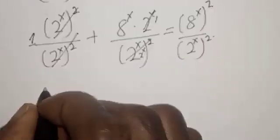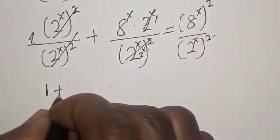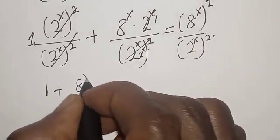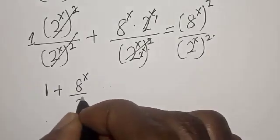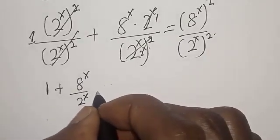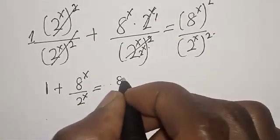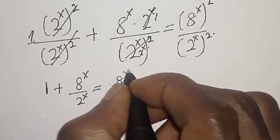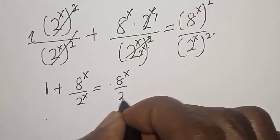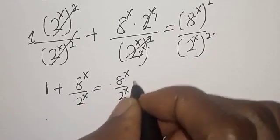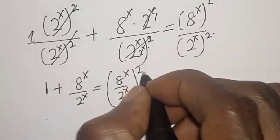Now we have 1 plus 8 raised to power s over 2 raised to power s, times 2 raised to power s, is equal to 8 raised to power s over 2 raised to power s, all squared.